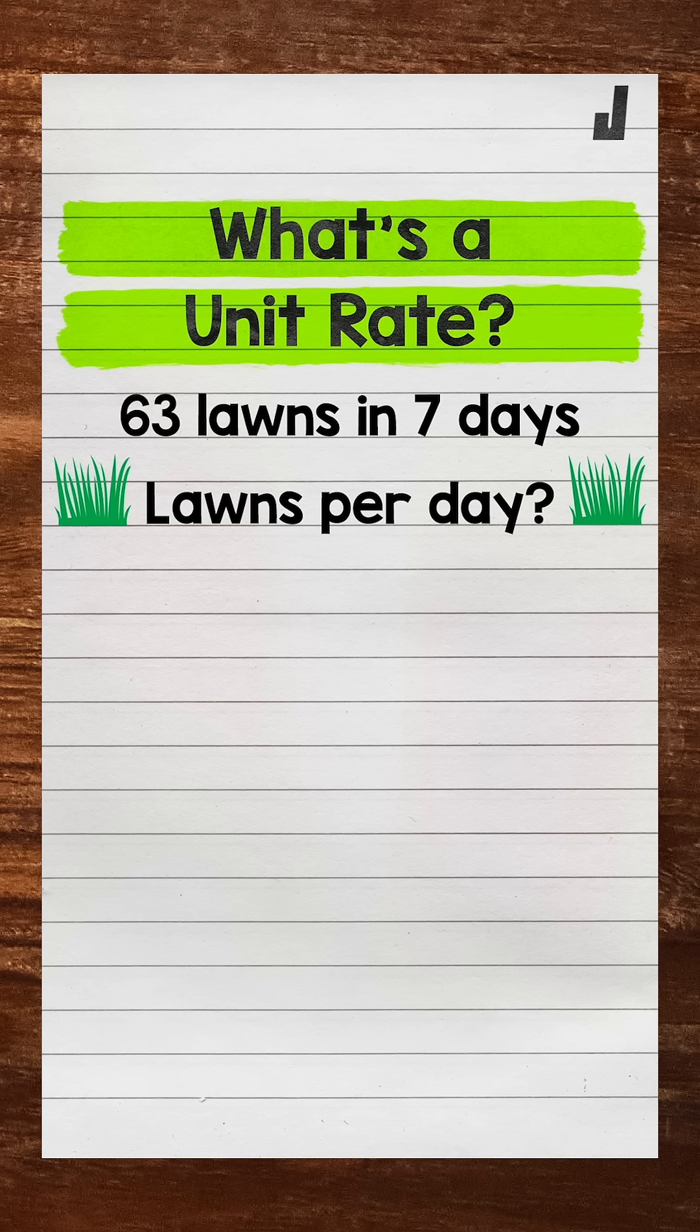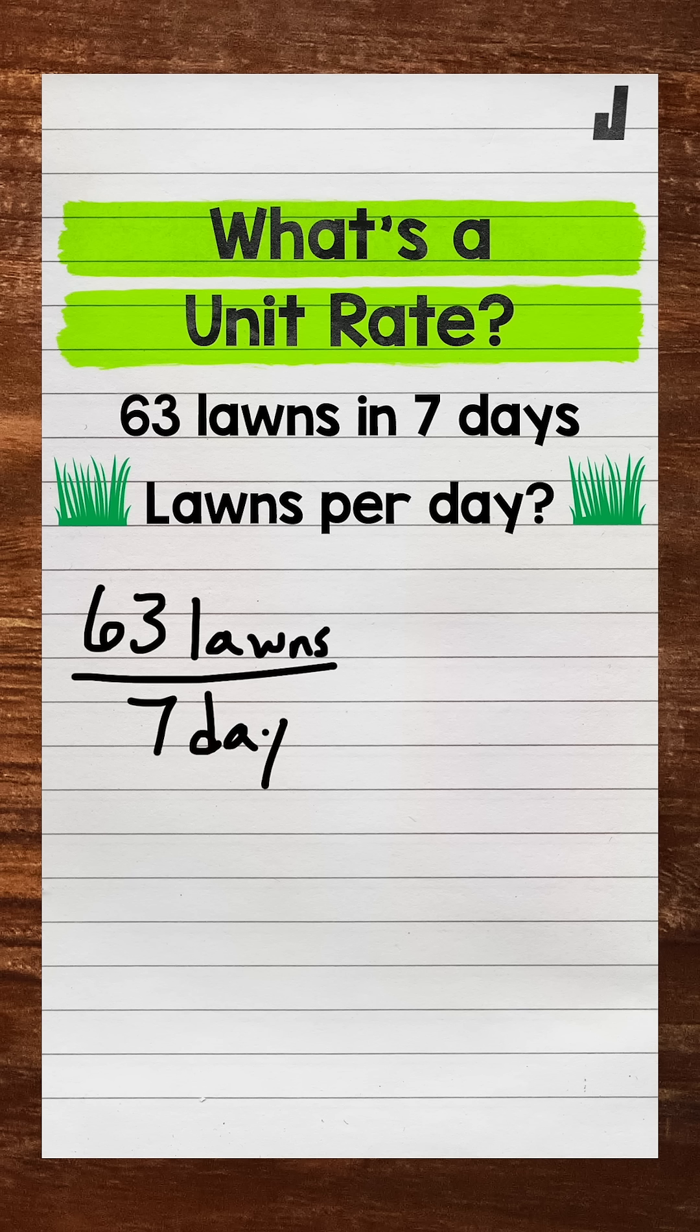For example, here, the rate is comparing the number of lawns mowed to the number of days it took. Let's write this rate in fractional form before writing this as a unit rate. So we have 63 lawns in seven days. And that's our rate. Again, we're comparing lawns to days.